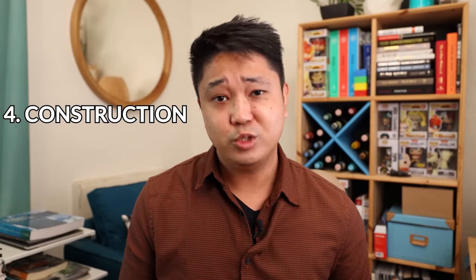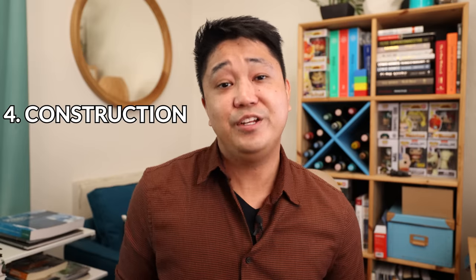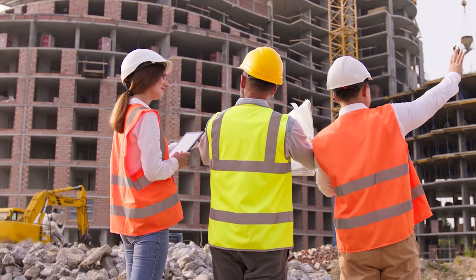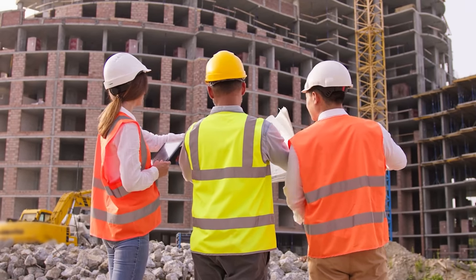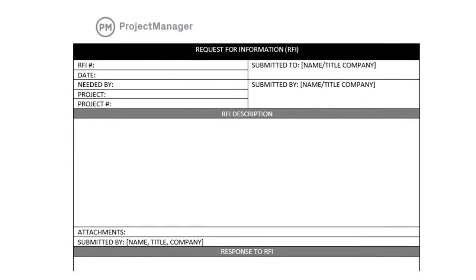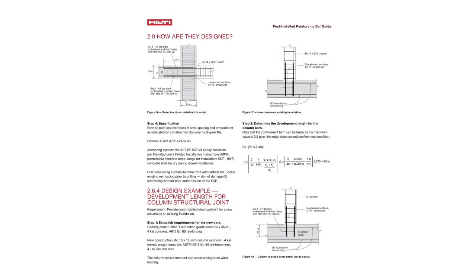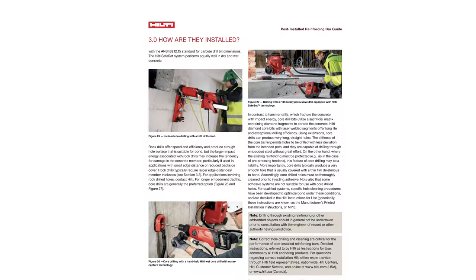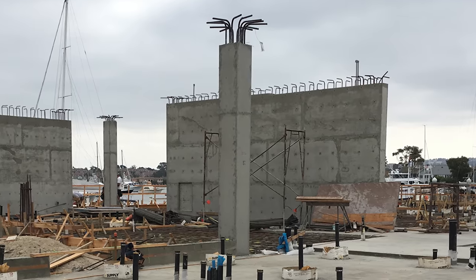Once the drawings are finalized, approved, and the building permit is obtained, construction starts. Structural engineers don't actually build or construct the building — those are the contractors — but they do play a critical role during the construction phase. They visit the construction site and provide guidance and direction to the contractor to make sure the building is being constructed in accordance with the structural drawings. They answer structural design questions and provide recommendations and solutions for when things change in the field. For example, if a column was placed in the wrong location and the concrete is already poured, the structural engineer will instruct them to drill and epoxy new steel into the existing concrete so they can construct the column in the right place.